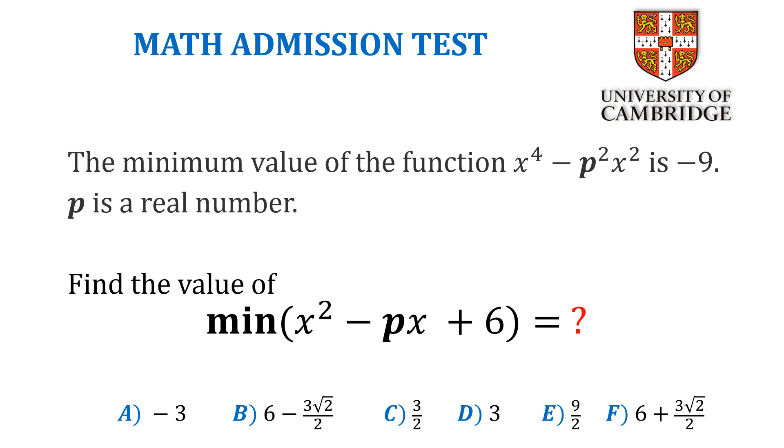Today we will try to solve this Cambridge Math admission test. The minimum value of the function x⁴ - p²x² is -9, and p is a real number. We'd like to find the minimum value of x² - px + 6. We have 6 options.